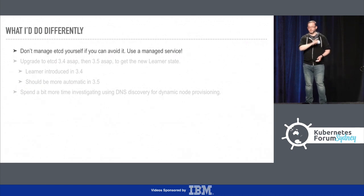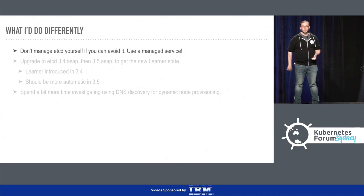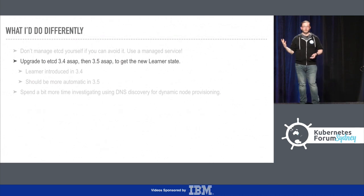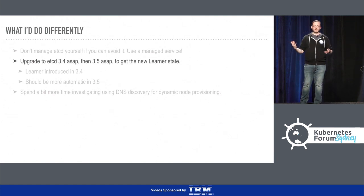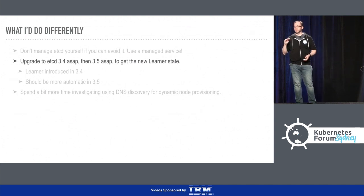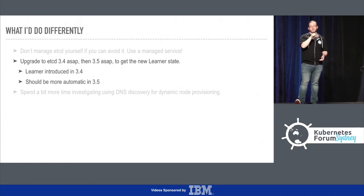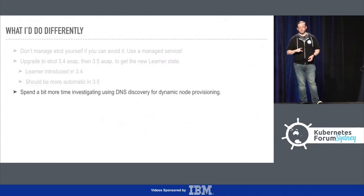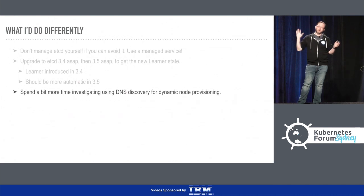So what would I do differently? Don't manage etcd yourself. Use a managed service that does it for you - make it someone else's problem. If you are managing your own etcd, you want to upgrade to 3.4 as soon as it's stable. There's a new node state called 'learner' that means when you're upgrading, instead of joining the cluster and being part of the consensus before it has populated all of the data, it learns first before it becomes part of the election. So it's impossible for a node in learner mode to cause a split brain via a loss of quorum. It makes upgrades much safer. It's in 3.4 beta now, and in 3.5 it will be the default. I would also spend more time investigating using DNS discovery for dynamic node provisioning to see if I could make something work for ASG - though I make no guarantees about that.